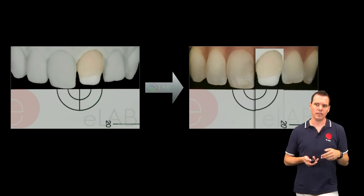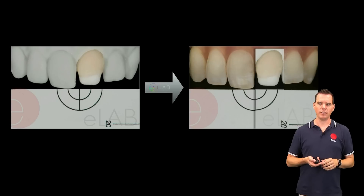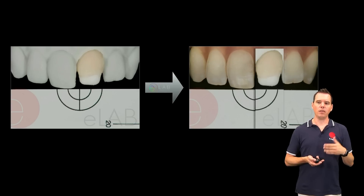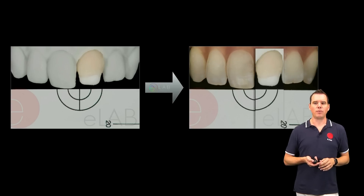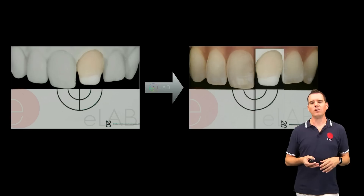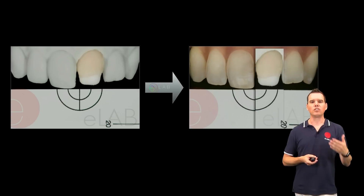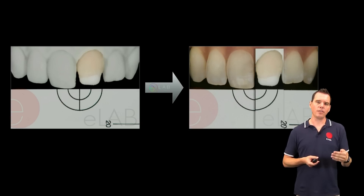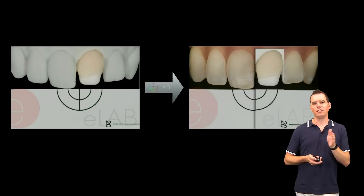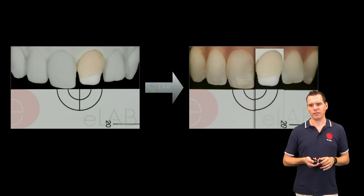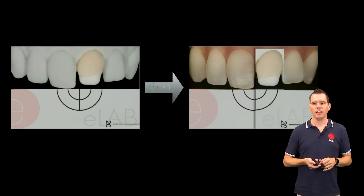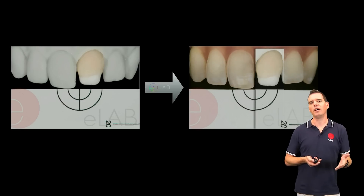The beauty of the elaborate protocol is that at any stage you can do a digital try-in — you can try in the crown although it hasn't been fired yet, digitally into the patient's mouth, as you can see here on the right hand side. This is a digital try-in of the unfired ceramic.